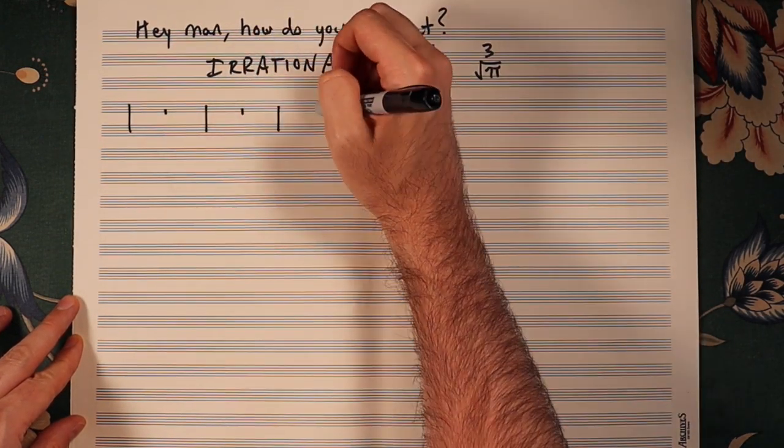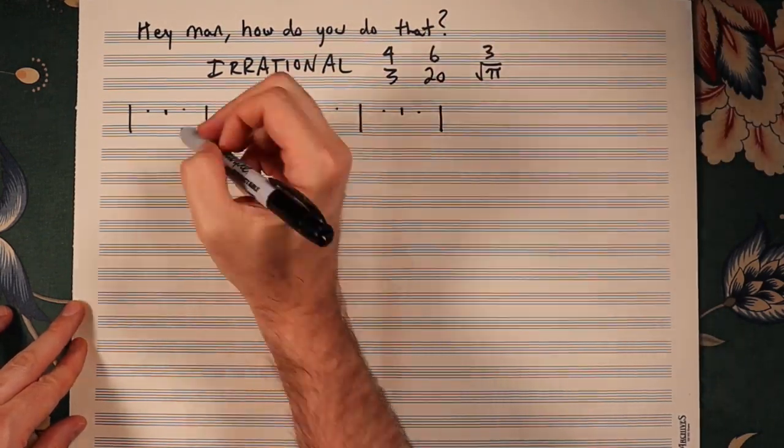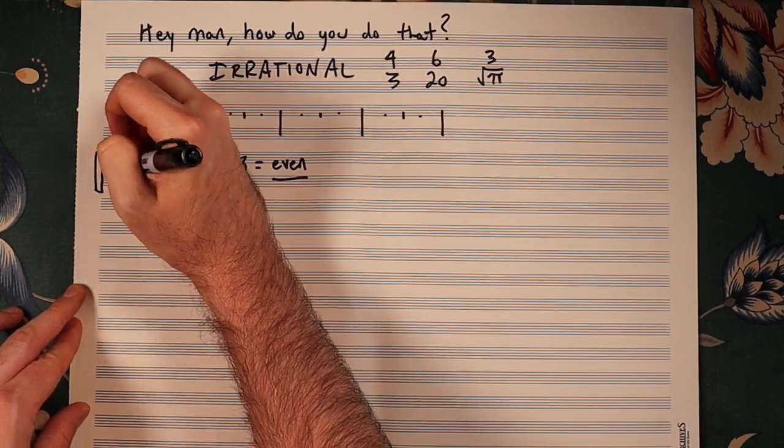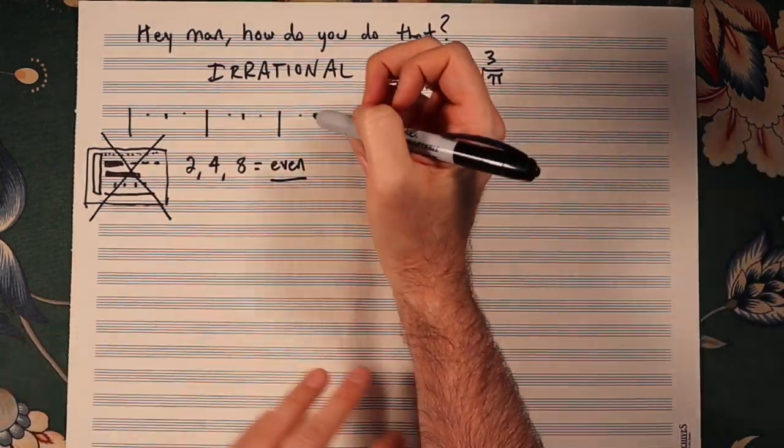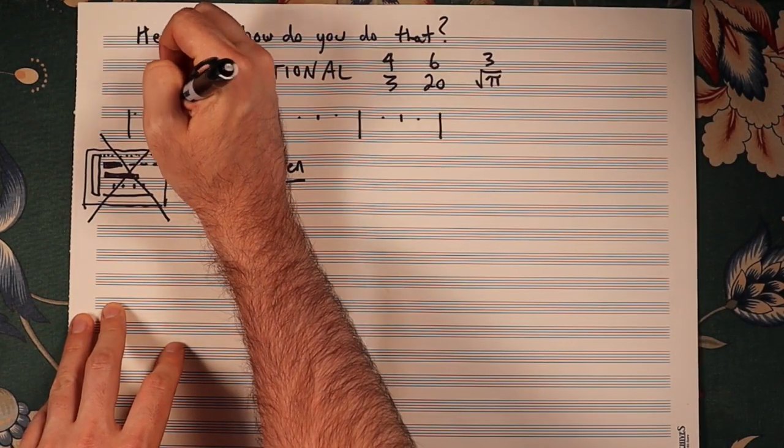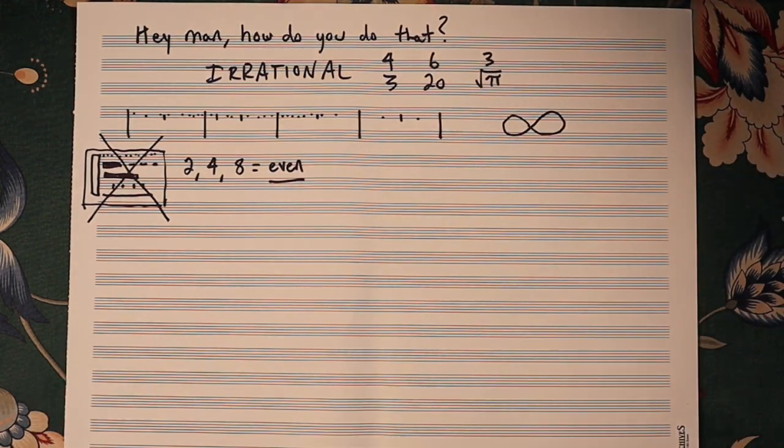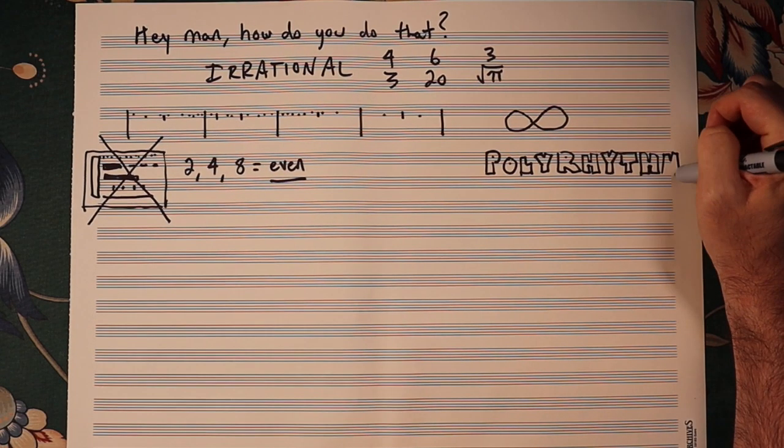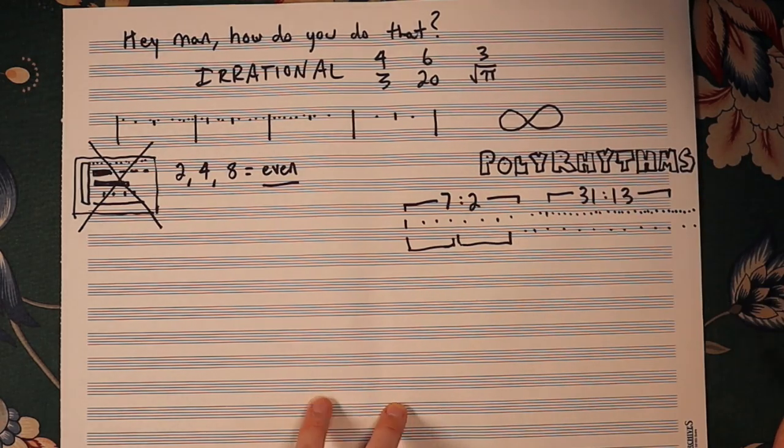We are used to even subdivisions in western music, for example, 8th notes and 16th notes. These rhythms are encouraged by the grid-based workflow of modern DAWs. However, the real world doesn't exist on a grid. We can play any number of notes within the space of any duration. The possibilities are literally infinite. These are usually referred to as polyrhythms. We can play 7 over 2, 31 over 13, or we can play 5 over 3.